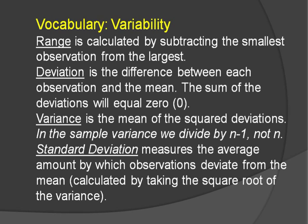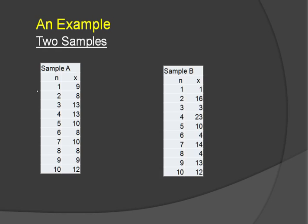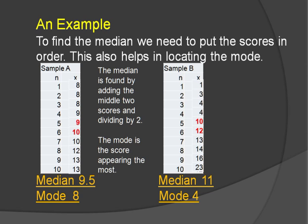Let's look at some samples now. We have two samples, sample A and sample B, with ten observations in each. Our x, the value that we observed, was 9, 8, 13, 13, and so forth in sample A, and 1, 16, 3, 23, and so forth in sample B. Those are just our observations. This is a sample—we didn't say what the population was, but maybe it's 10 out of a population of 100. We didn't actually state that, but we do have a sample.